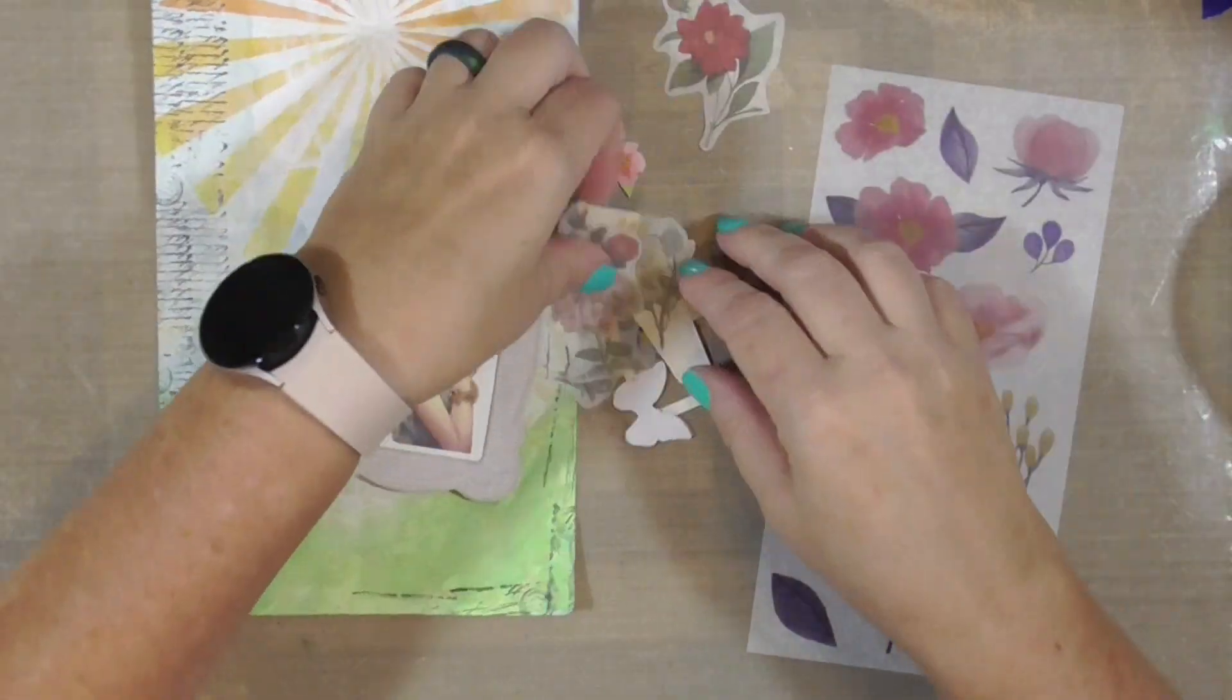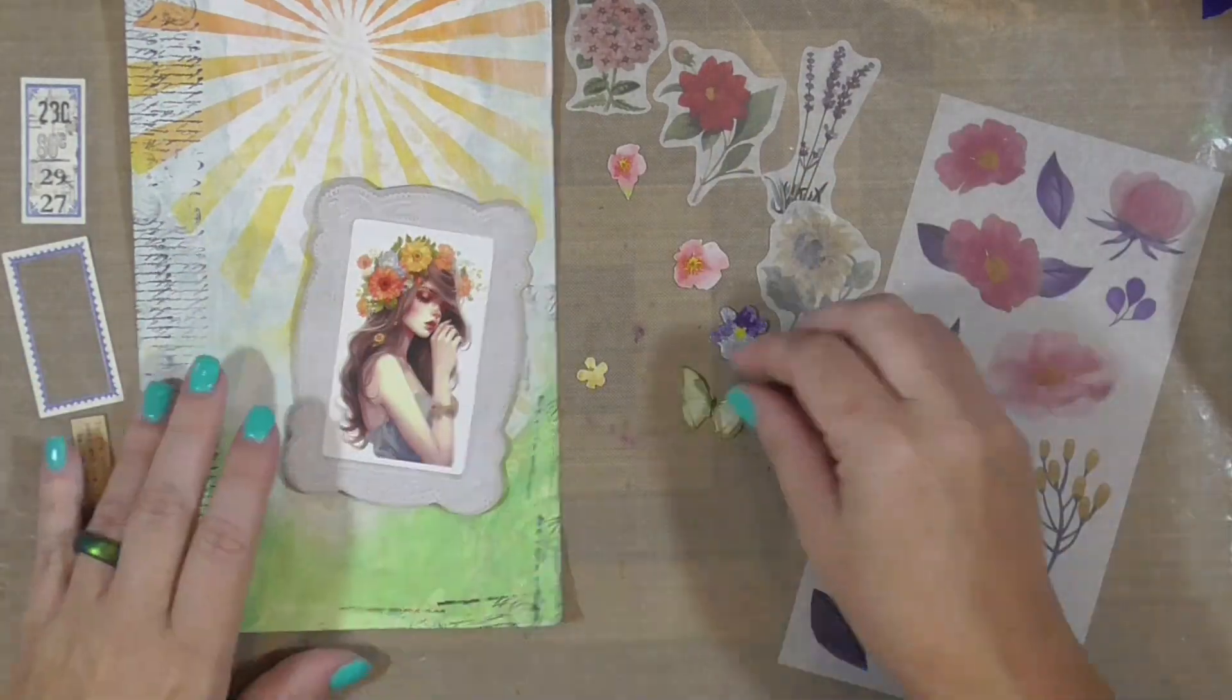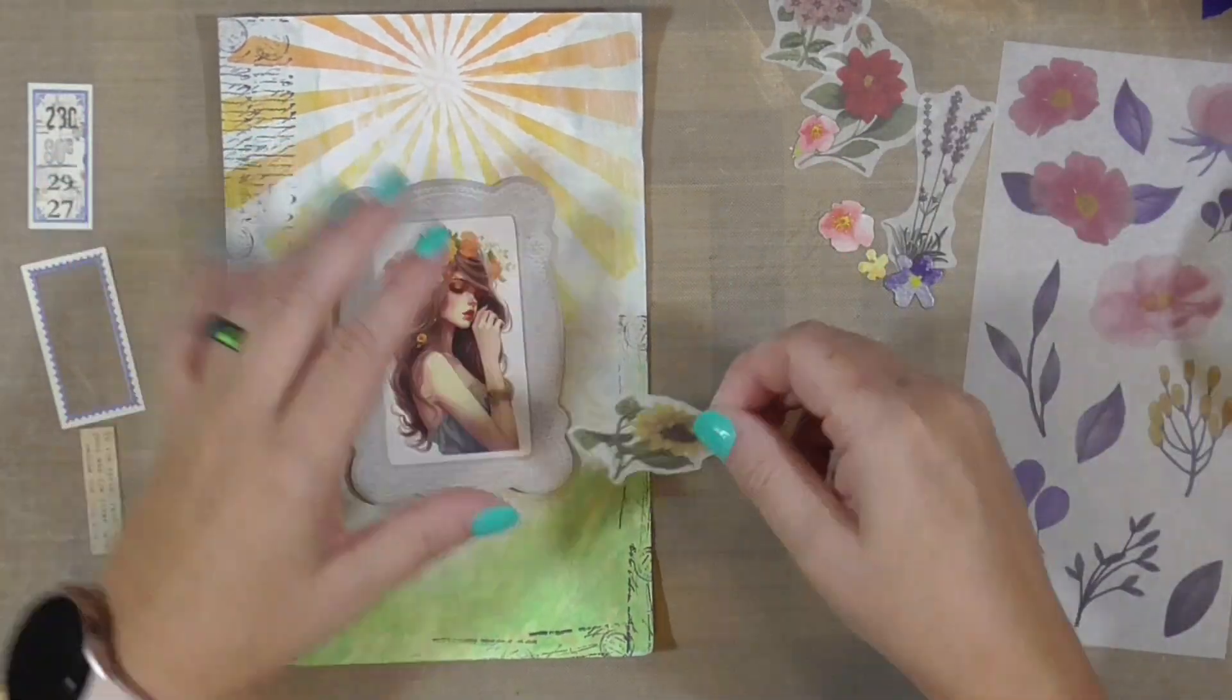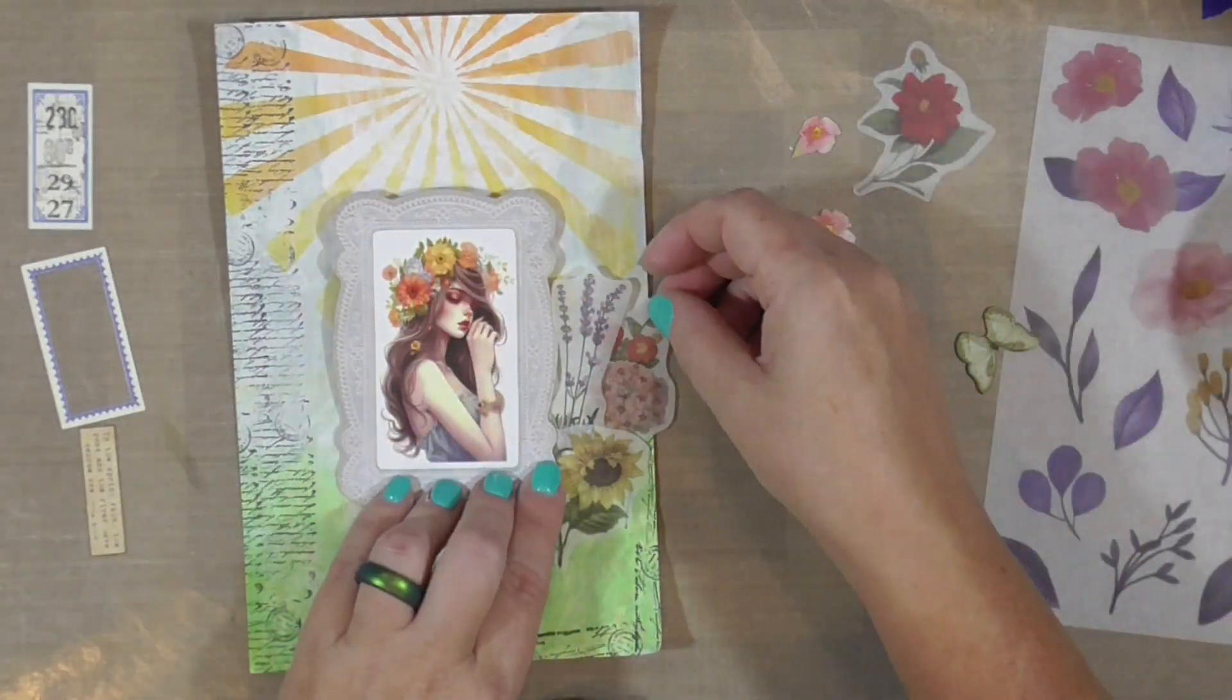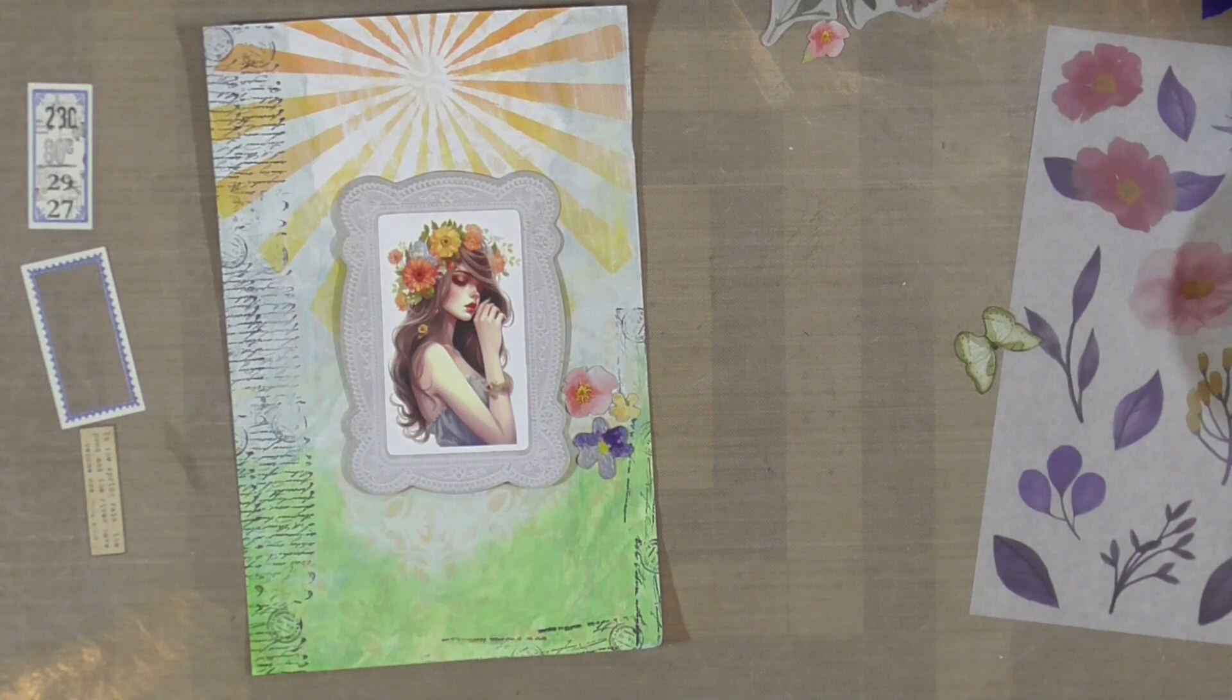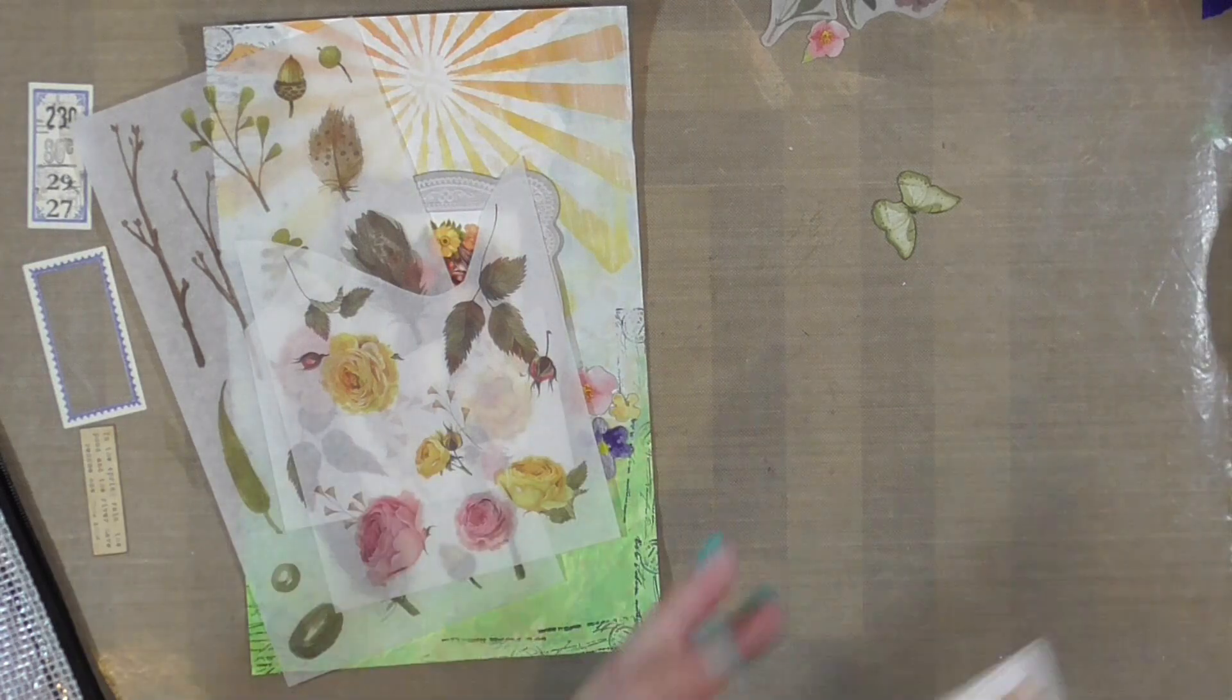And I went through my ephemera drawer and I pulled out every kind of flower image that I could find. Plus a couple of other things that I didn't end up using. And I have this sheet of flowers that are stickers. I got these from Target's dollar spot or Amazon. I don't even remember. And then I have all these pre-cut stickers that I know I got from Amazon. And then I have some chipboard stickers that are a Vicky Papanayu collection from Stamperia.